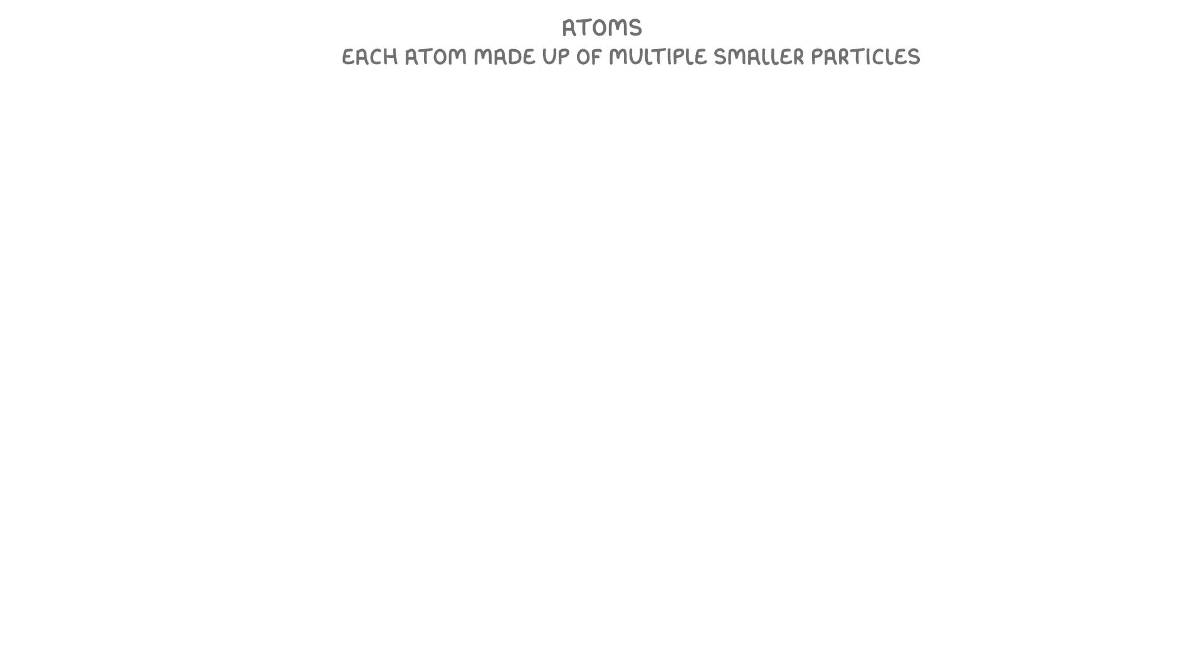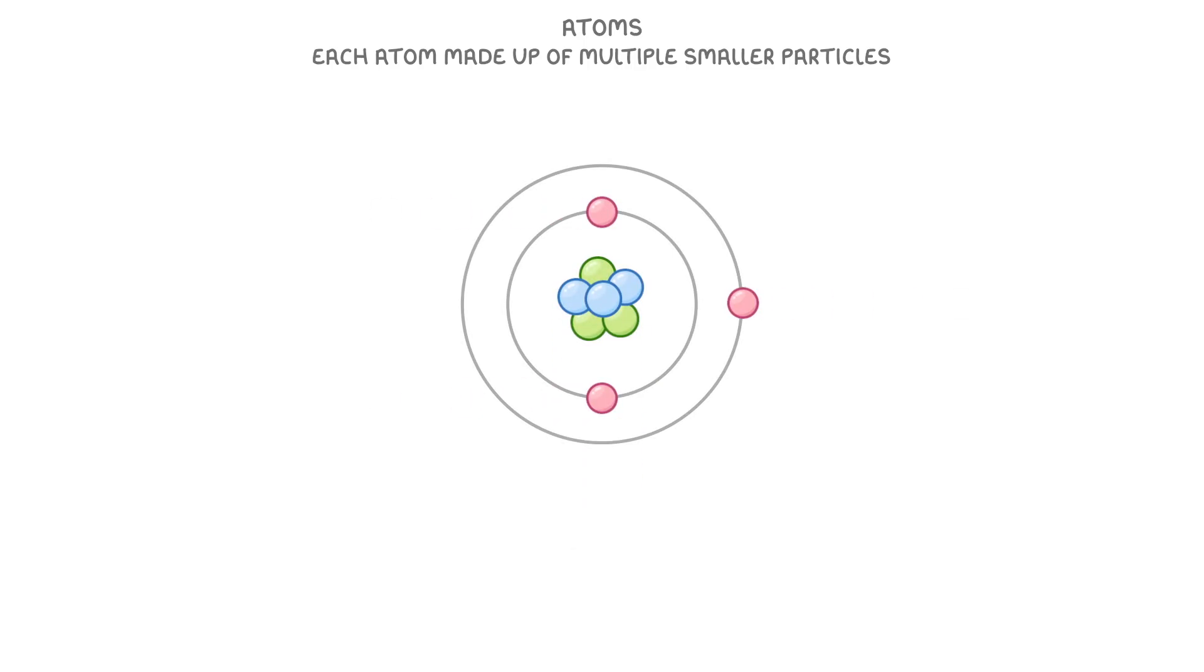The first thing to know is that each atom is made up of multiple smaller particles, and its basic structure is a central nucleus surrounded by electrons, which orbit around the nucleus in rings that we call shells. Although we've only shown one electron orbiting here, in reality all of the electrons would be moving all the time.